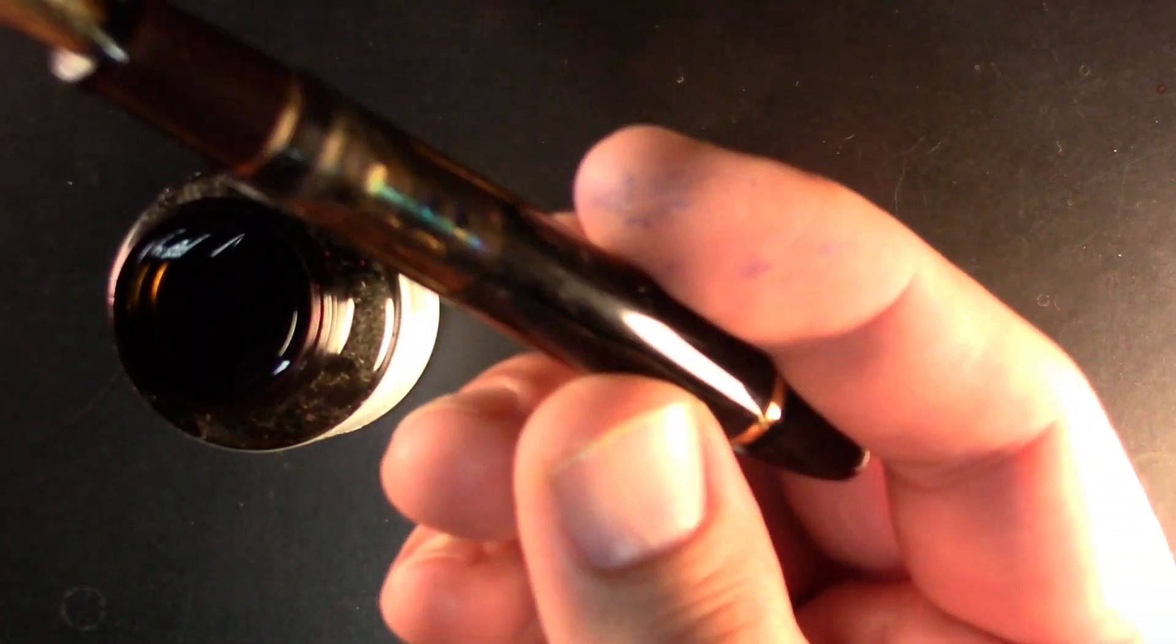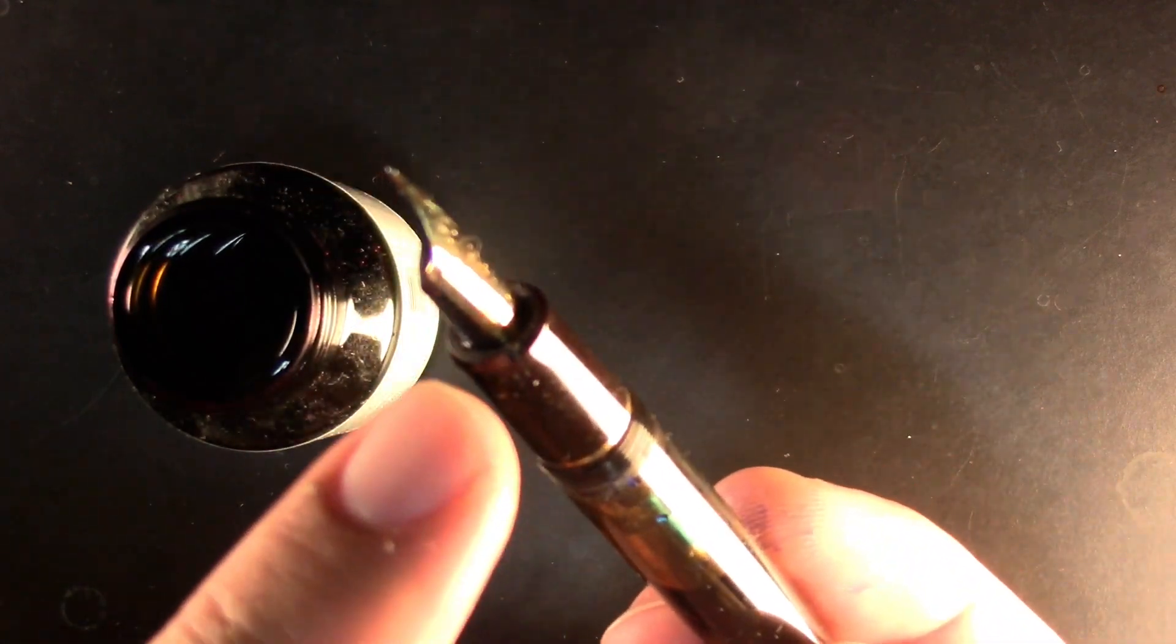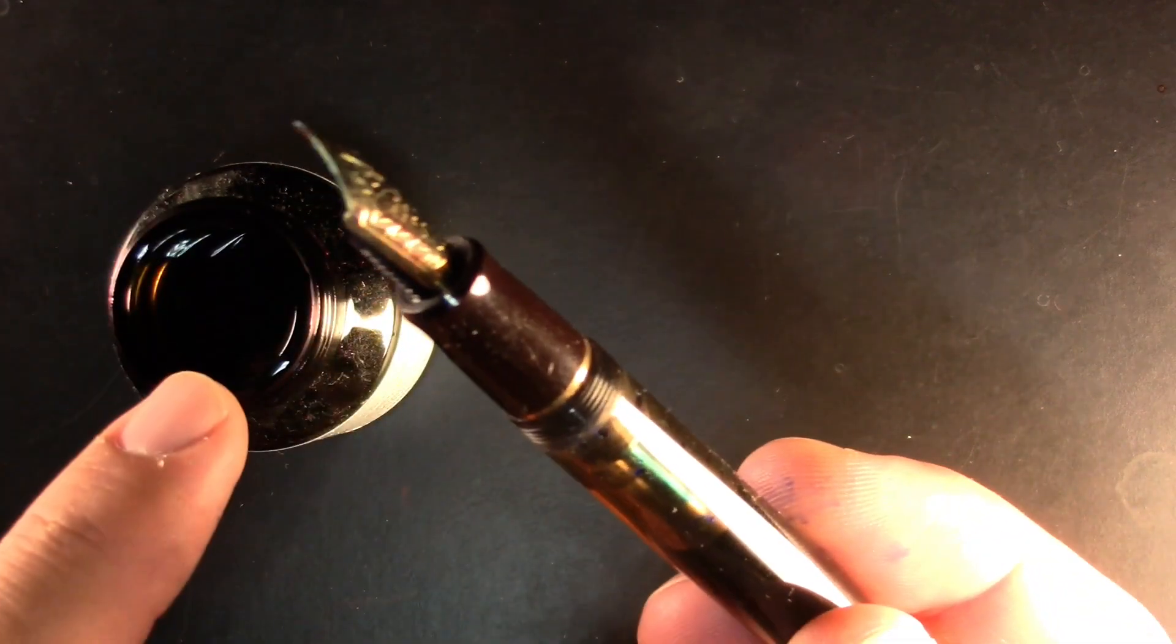If I want a completely full fill, which I don't think I do at this time, I would tip it upside down, pull the plunger out, push it in until ink starts to come out around here, then I'd put it into the ink and finish filling it the rest of the way.